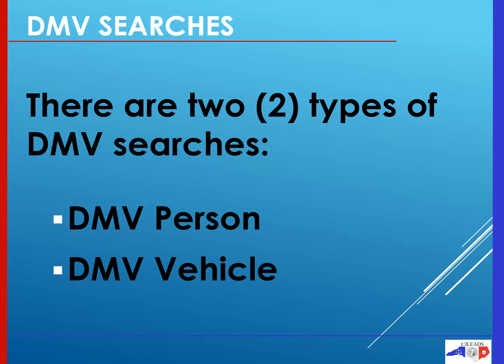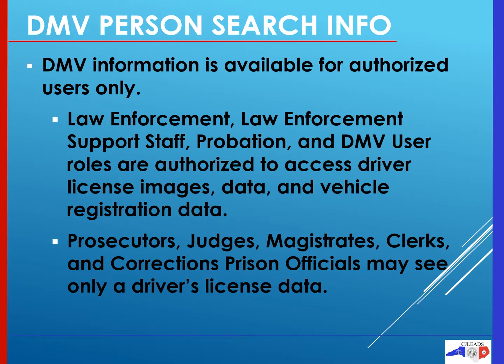Within CJ Leads, there are two types of DMV searches: the DMV person search and the DMV vehicle search. DMV information in CJ Leads is available for authorized users only. Law enforcement, law enforcement support staff, probation, and DMV user roles are authorized to access driver's license images, data, and vehicle registration data.